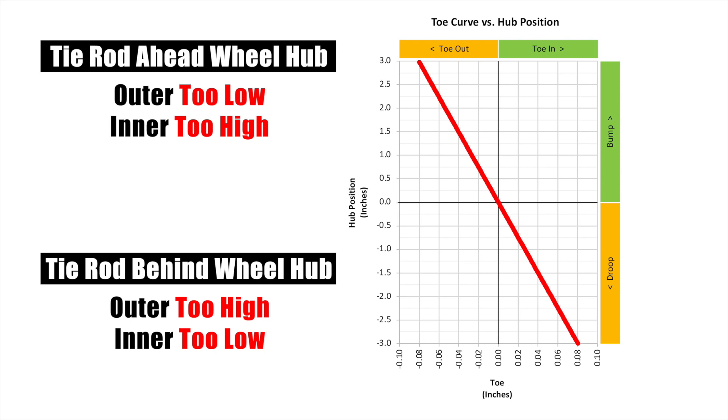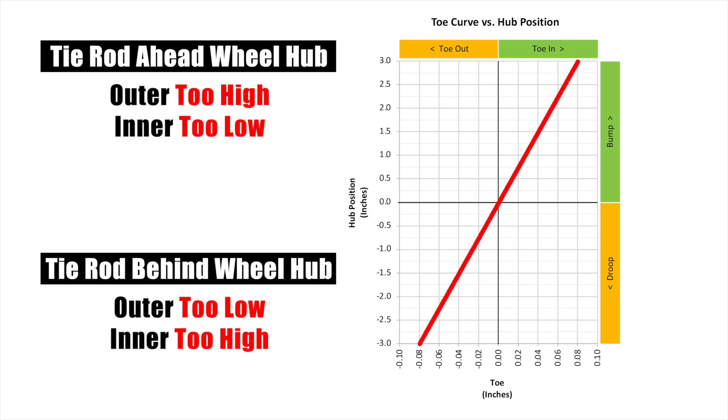Use the following illustrations as a guide on which direction to move with your spacer stack. Keep in mind that if the tie rod is behind the hub, the results will be the opposite as if the tie rod is in the front of the hub. This means the direction that you move with your spacer stack height will be the opposite on the front of a Mustang versus on the rear of a Mustang with an IRS.